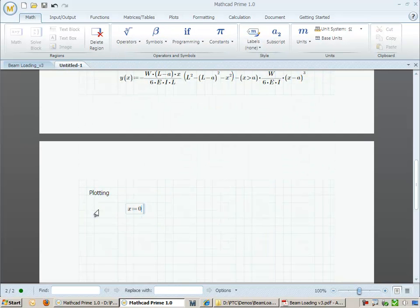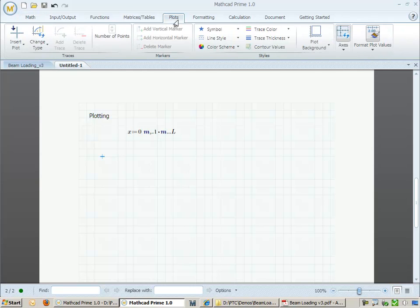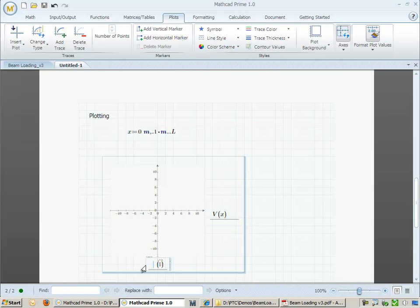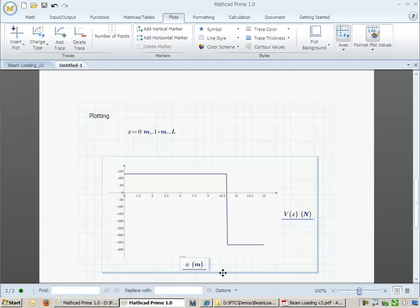Now that we have equations for the shear, moment, and deflection of the beam, let's go ahead and add in some plots. Before we do so, we need to define an independent variable, x. To add a plot, I can scroll over to the Plots tab on the ribbon menu.